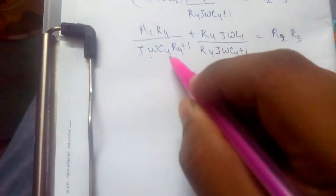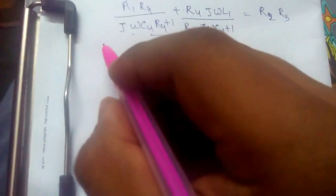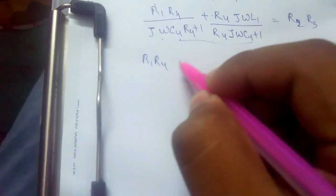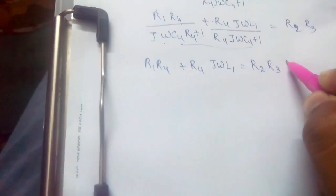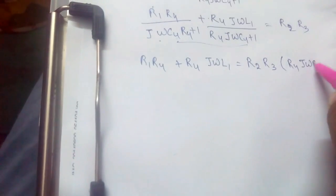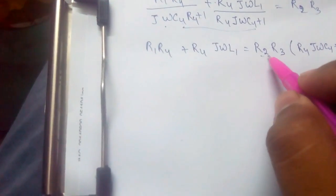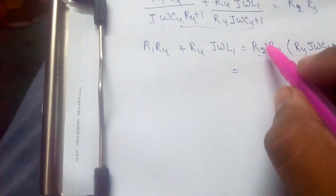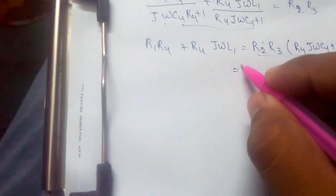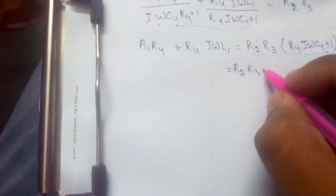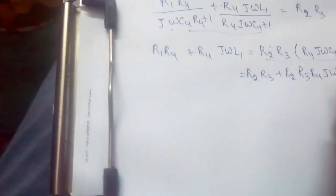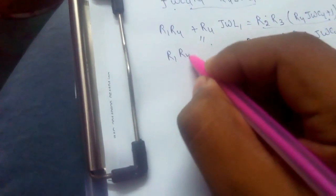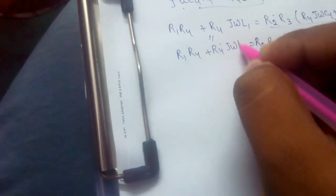R1 equals R2 R3. As this is common, we can take it to this side. Therefore, the equation would be R1 R4 plus R4 j omega L1 equals R2 R3 R4 j omega C4 plus 1. Now we would multiply these two terms, and we get R2 R3 plus R2 R3 R4 j omega C4, which equals R1 R4 plus R4 j omega L1.